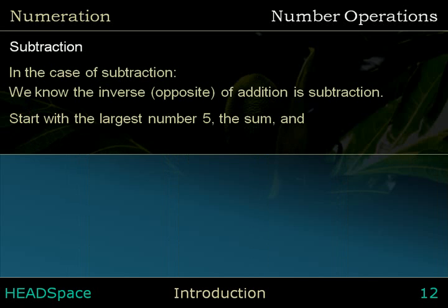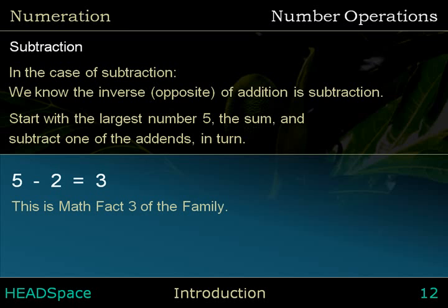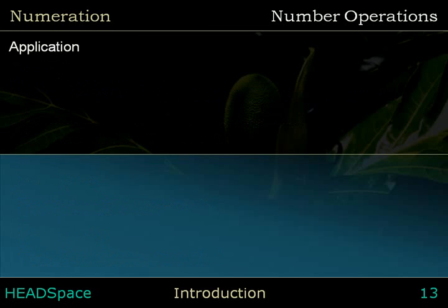Start with the largest number, 5 — the sum — and subtract one of the addends in turn. 5 minus 2 equals 3. This is math fact 3 of the family. 5 minus 3 equals 2. This is math fact 4 of the family.